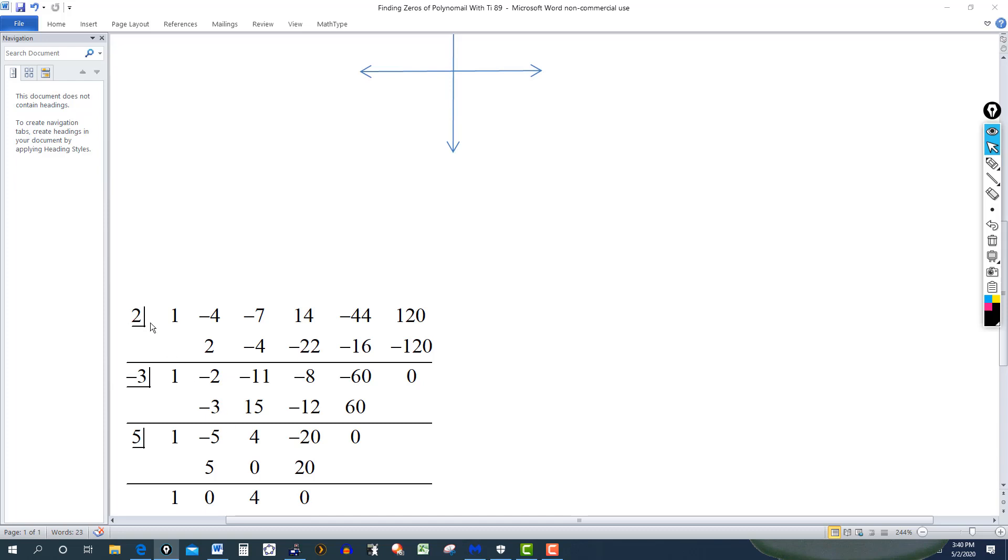Now, we divide it then. This is the equivalent of dividing the polynomial, 5th degree polynomial by a factor of x minus 2, x plus 3, x minus 5. That reduces the degree from 5 to, this is now a second degree. So, basically, this just gives me x squared plus 4.